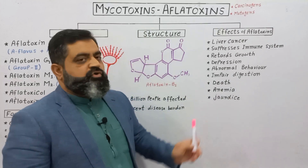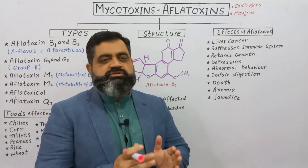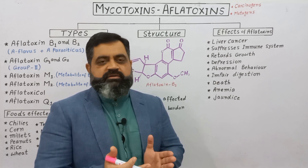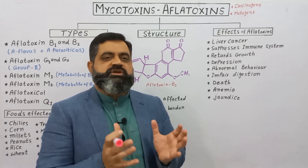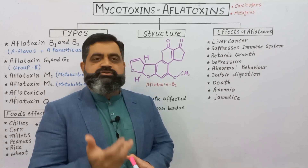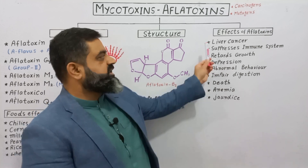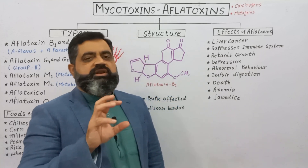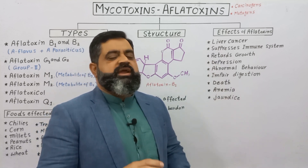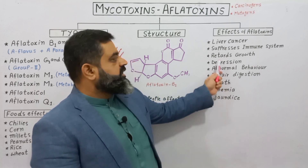When aflatoxins enter our body, after passing through the digestive system these toxins are carried to the liver through the blood. The liver is the first organ to encounter these toxins and attempts to remove them, but in doing so it can suffer damage, which can lead to liver cancer. Aflatoxins also suppress the immune system, weakening it so that many different diseases can attack the body.